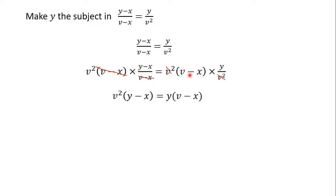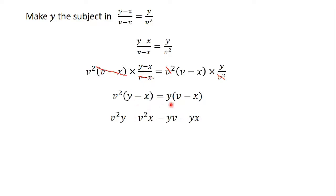Here too, we have (v minus x) times y, so I will put (v minus x) into bracket and write y outside the bracket. From here, you open the brackets and simplify. So you are going to have v squared times y, which gives us v squared y; v squared times x gives us minus v squared x, because there is a negative sign there. y times v gives us yv, and y times x gives us yx — don't forget the negative sign — so minus yx.